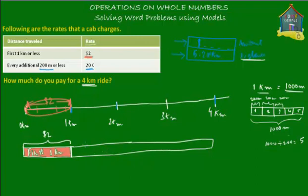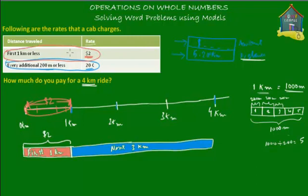The next three kilometers is this part here in the model, painted in blue. The first part in the model corresponds to the first row in the table — first kilometer or less is $2. And the next three kilometers corresponds to the second row — every additional 200 meters or less is $0.20.